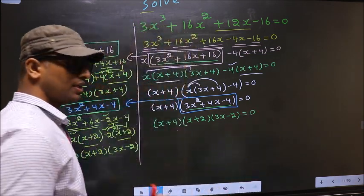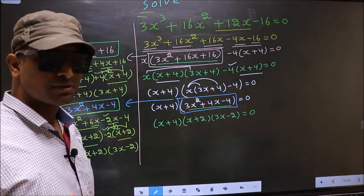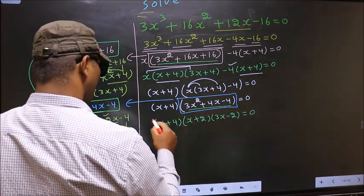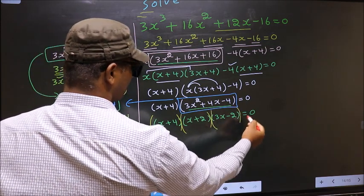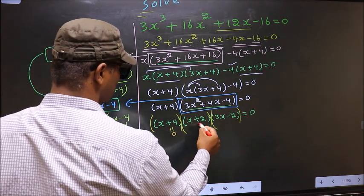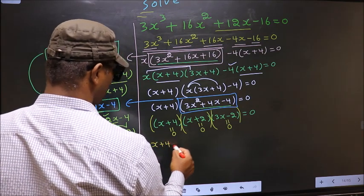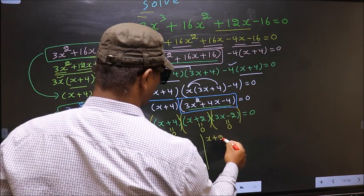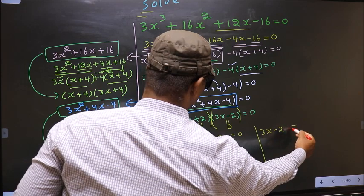They told us to solve, which means we should get the values of x. Over here we have a product of brackets equal to 0. So to get x values, we should equate each bracket to 0. That is: x plus 4 equal to 0, x plus 2 equal to 0, and 3x minus 2 equal to 0.